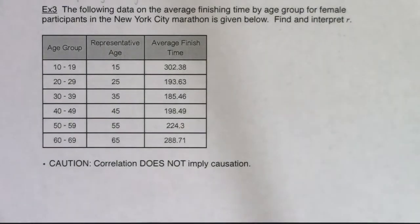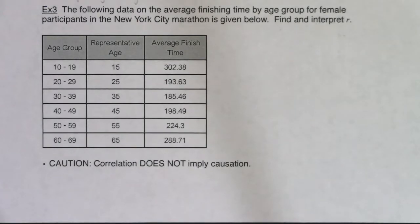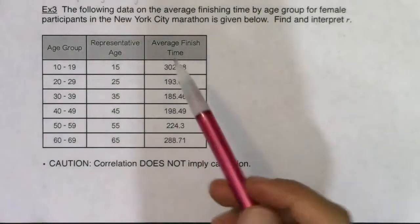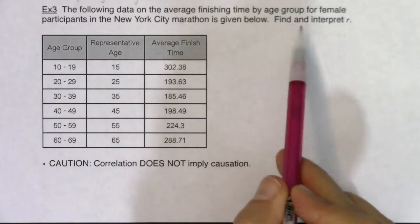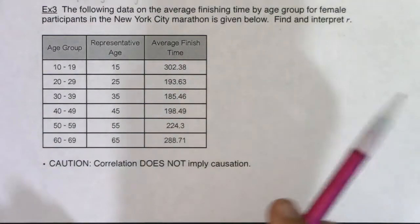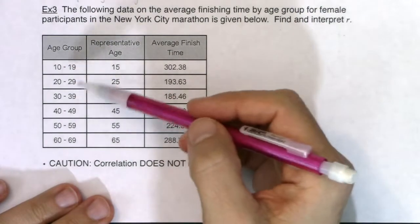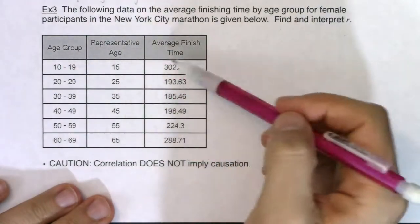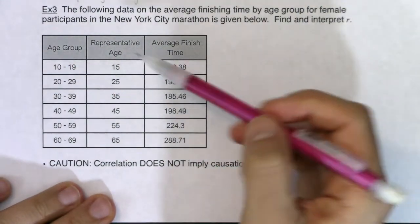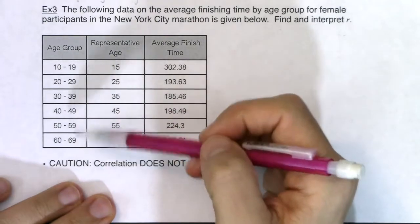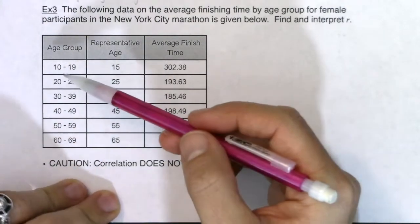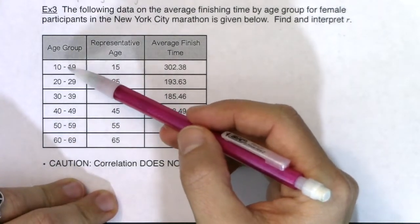Let's take a look at example three. It gives data on the average finishing time by age group for female participants in the New York City Marathon and asks us to find and interpret r. Looking at the variables: age and average finish time. Age is definitely a continuous numerical variable.